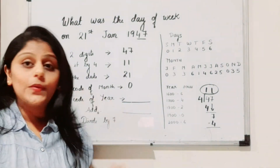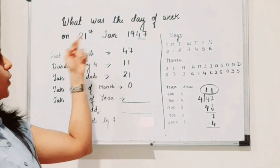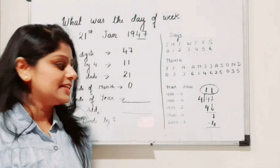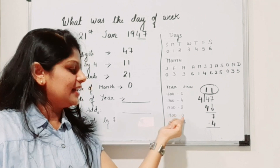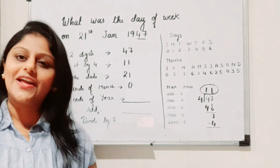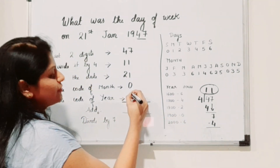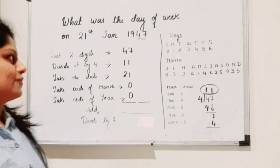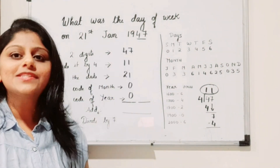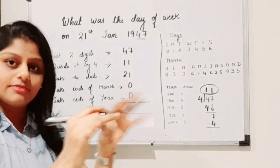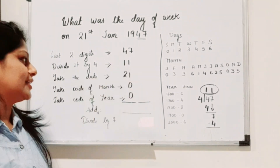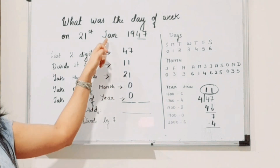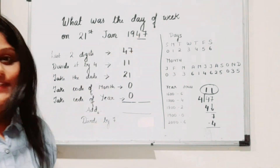Next, write the code of the year. 1947 falls in the 1900 series, and the century code for 1900s is 0. So write 0. To summarize the steps so far: write the last two digits of the year, divide by 4 and write the quotient, then write the date, the month's code, and the year's code.